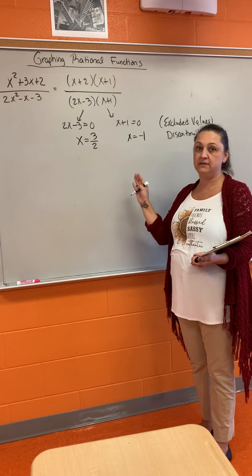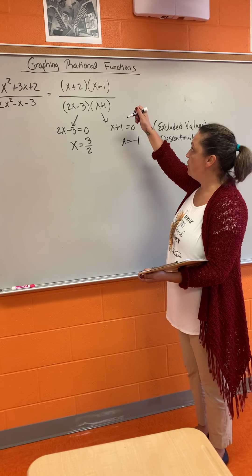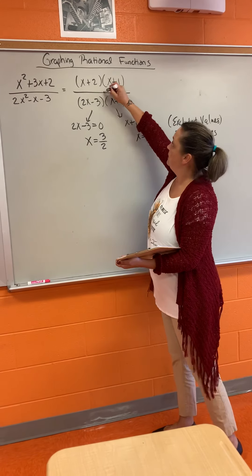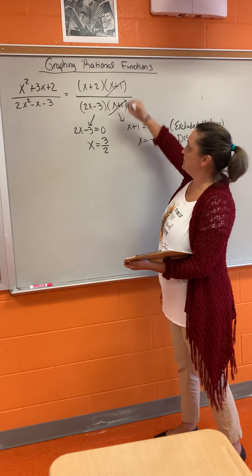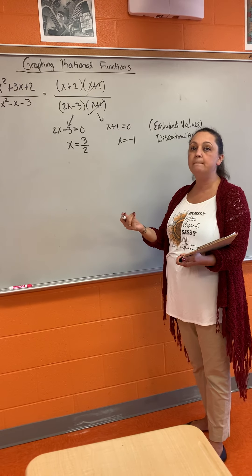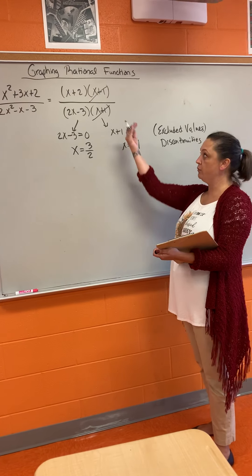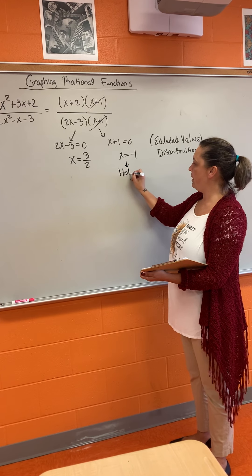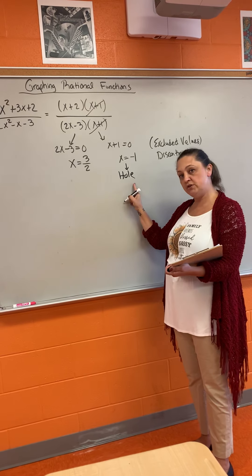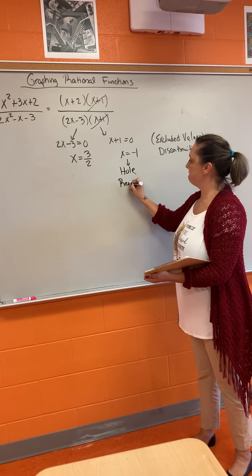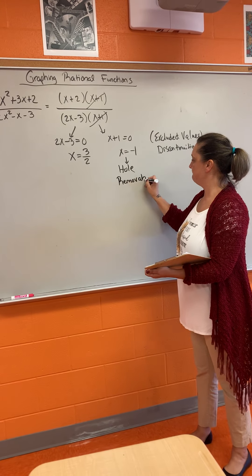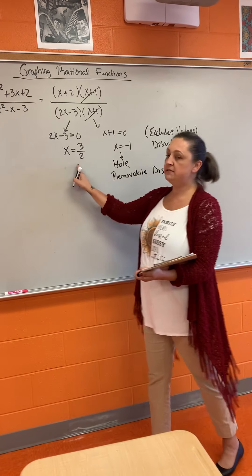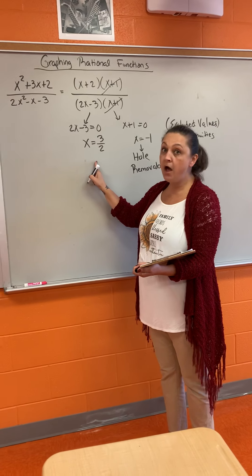Now we have to classify the discontinuity. When you go back to your factored function, you can reduce. The (x + 1) on top and the (x + 1) on the bottom reduce. That's called a removable discontinuity, because you can remove it. On a graph, a removable discontinuity is a hole. The x = 3/2 is not removable.